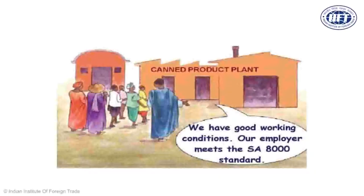The other social standard is SA8000, where an external body audits and certifies that you are giving your workers very good working conditions — benefits, no discrimination between male and female workers, no discrimination on the basis of religion or caste, and good working conditions in terms of CSR activities, work culture, and work environment.